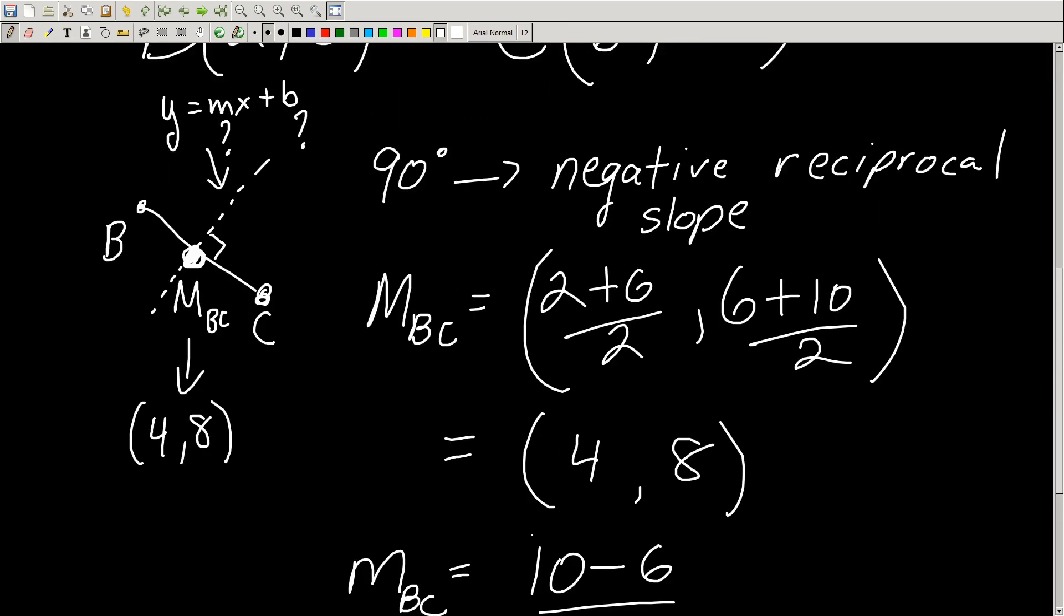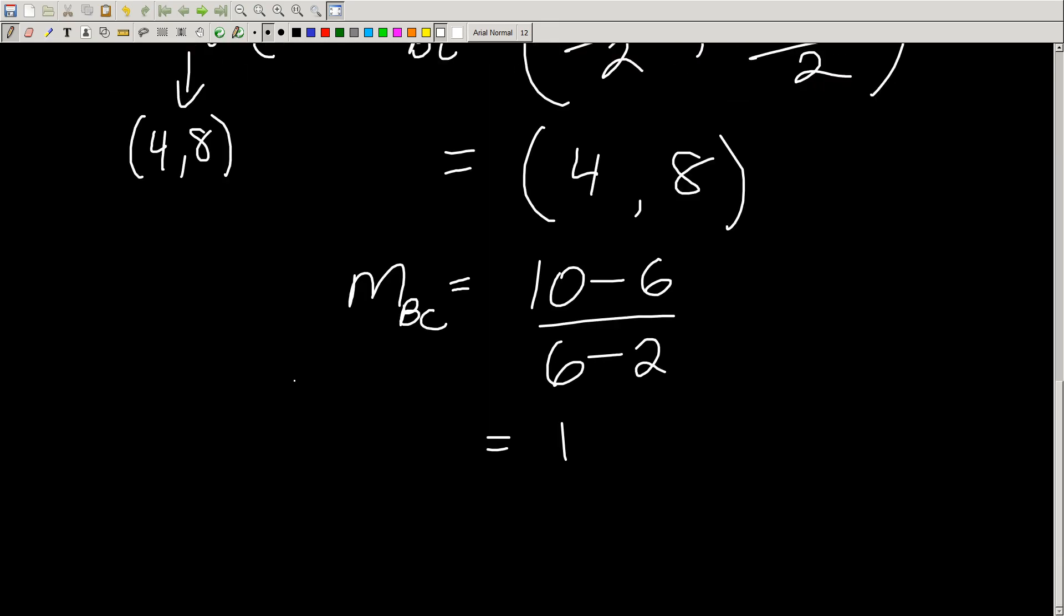Now think about it this way: if that dashed line is 90 degrees, then the slope of this guy is the negative reciprocal of this guy. So your m, let's just call it m, is going to be the negative reciprocal of this.